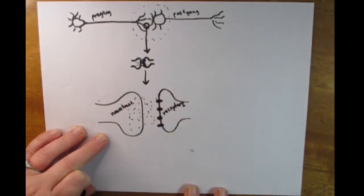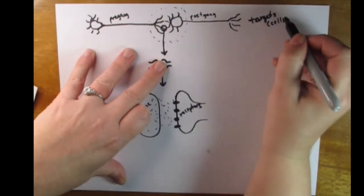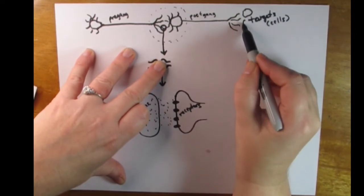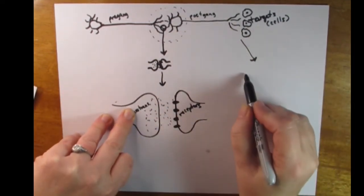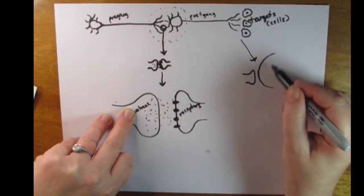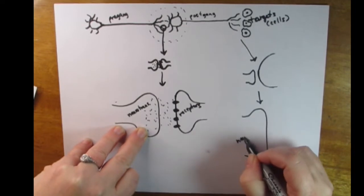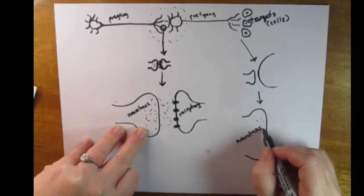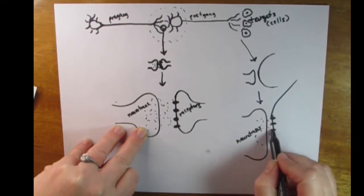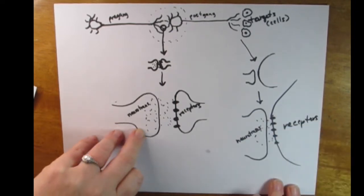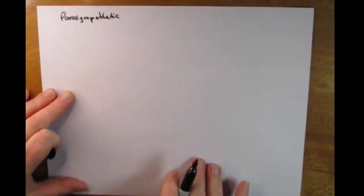The postsynaptic cell receives input from receptors on the dendrite of the postganglionic cell. We also have to consider the targets. The targets are also able to receive input. These targets are made of tissues and cells, and we put nuclei inside to indicate they are cells. There is the release of a neurotransmitter from a presynaptic neuron that crosses the synapse and interacts with the cell. The cell must have receptors for that particular neurotransmitter.